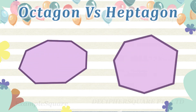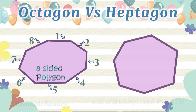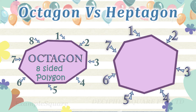Which one of these is an octagon and which one of these is a heptagon? This is an octagon with eight sides, and this is a heptagon with seven sides.